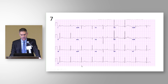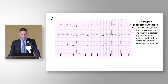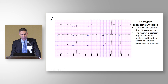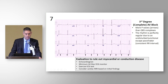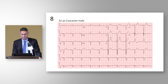Here's another ECG demonstrating atrioventricular block. In lead two, there are P waves that aren't conducted. This is an example of third-degree or complete AV block — more P waves than QRS complexes, with the QRS complexes fairly regular from an undisturbed junctional escape rhythm, representing complete dissociation between P waves and QRS complexes. Third-degree AV block is not a normal finding and requires a good evaluation to rule out myocardial or conduction disease.